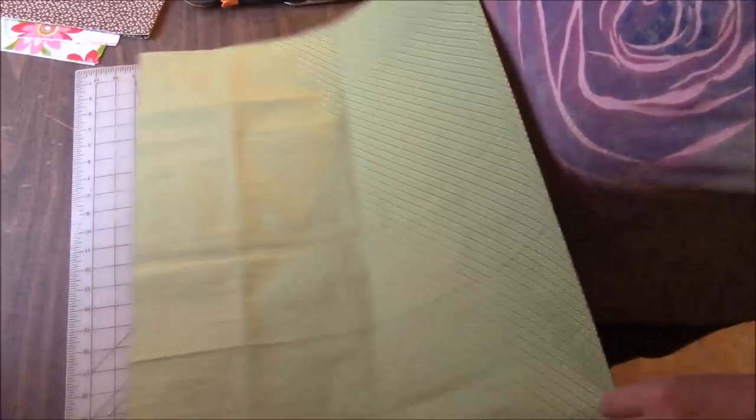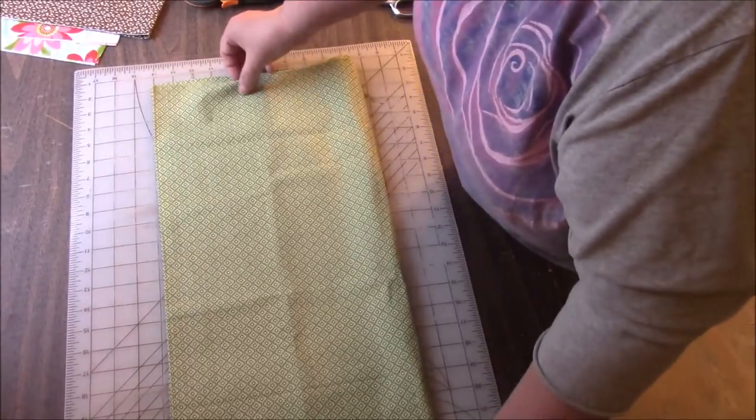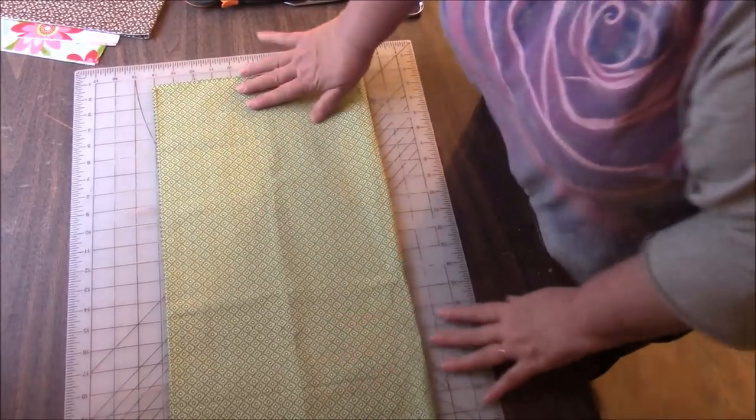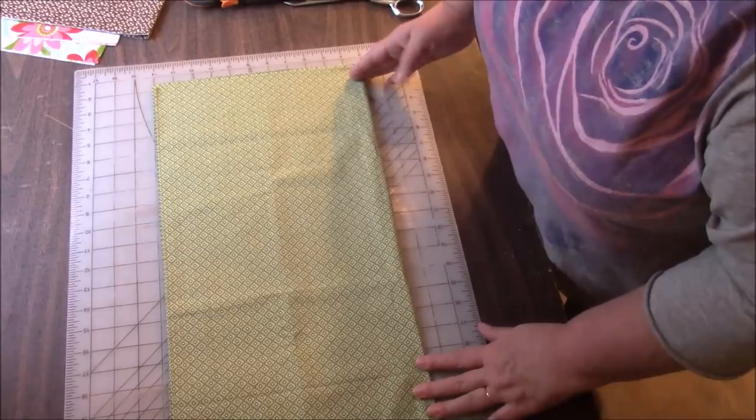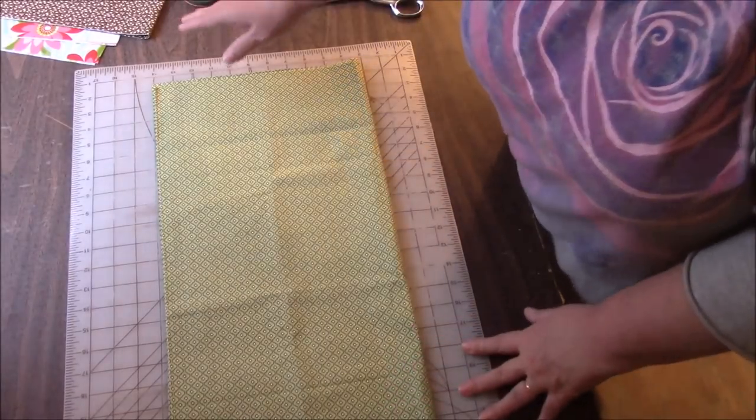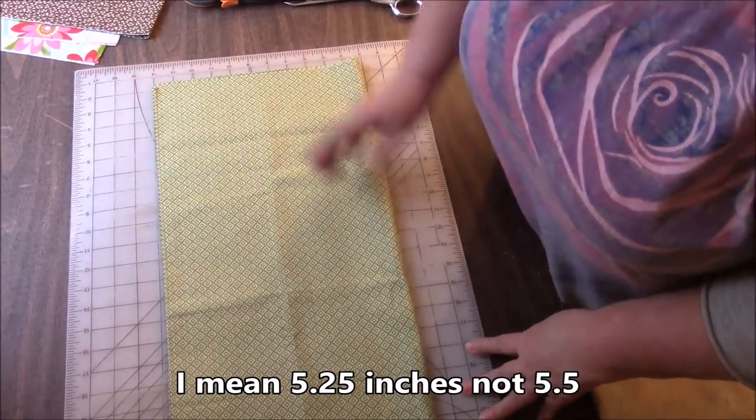So I just fold it in half up to the salvage. And if I don't have a straight edge, which I normally don't, I just go ahead and trim that edge. And then I'll just go over, for these it's five and a half inches, so I would just go over five and a half inches and cut, five and a half and cut. And I need four strips of the wonky, wonky one and wonky two.